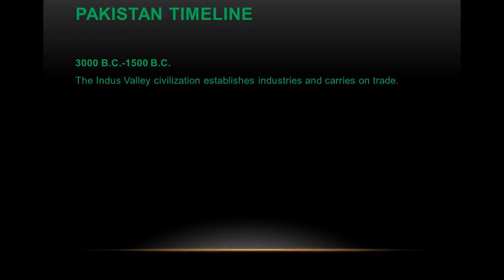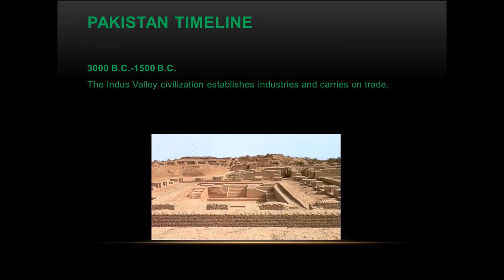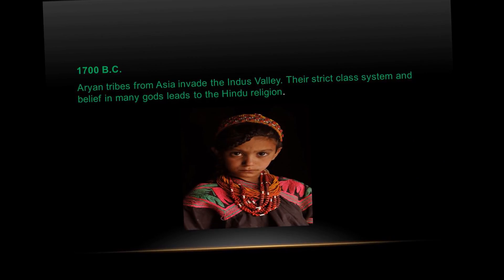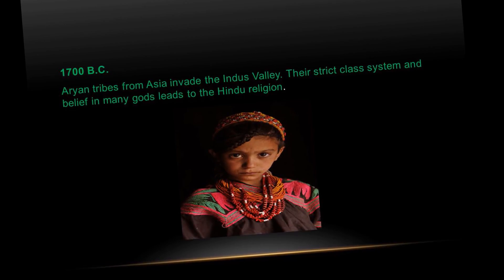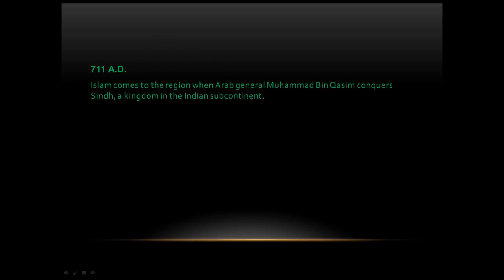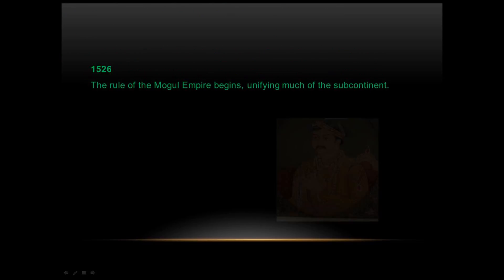From 3000 BC to 1500 BC, the Indus Valley civilization established industries and carried on trade. Around 1700 BC, Aryan tribes from Asia invaded the Indus Valley. Their strict class system and belief in many gods led to the Hindu religion. Then in 711 AD, Islam came to the region when Arab general Muhammad bin Qasim conquered Sindh, a kingdom of the Indian subcontinent.